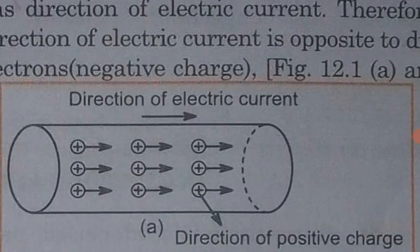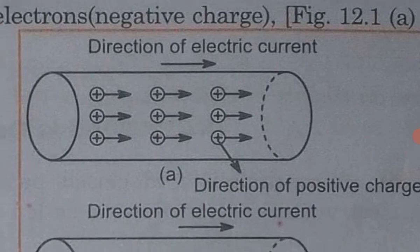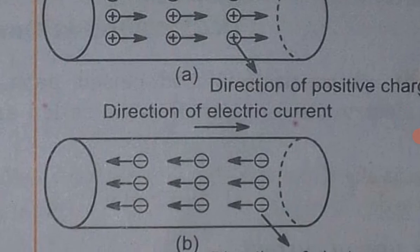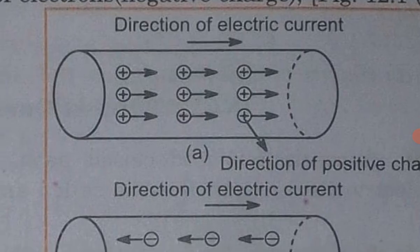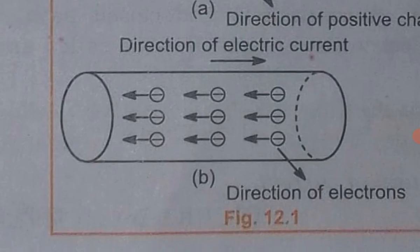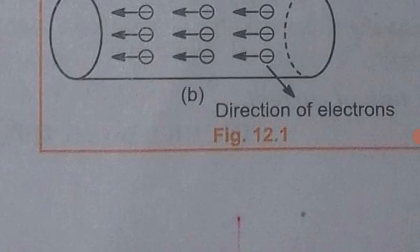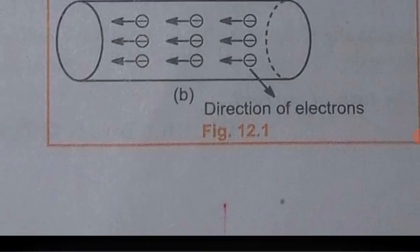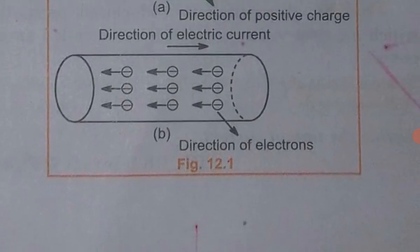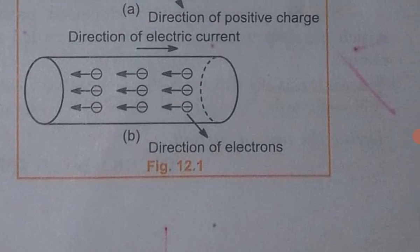In metals, the direction of flow of current is opposite to the direction of flow of free electrons. If the charge is positive, the electric current direction is towards it, but in negative charge, the direction of flow of electric current is opposite.